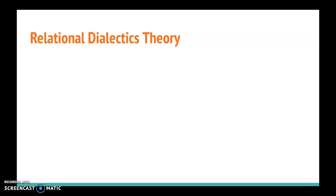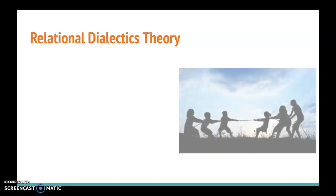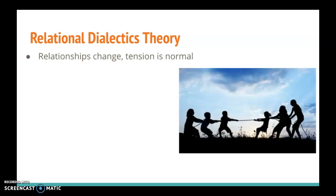Let's talk about relational dialectics theory. Relational dialectics theory was founded by communication scholars Baxter and Montgomery, and it looks at the fact that our relationships change over time, and that tensions within our relationships are totally normal. It proposes that good and clear communication is necessary in order to resolve those tensions. Relational dialectics theory has four key features: contradiction, totality, process, and praxis.